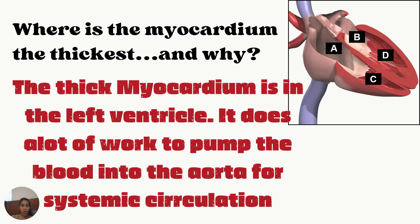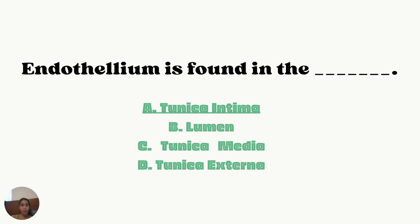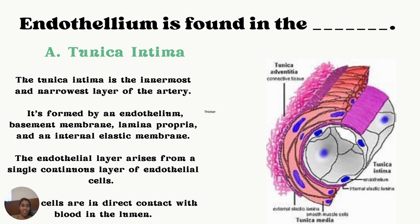The myocardium is thickest in the left ventricle. Now, endothelium — it is found in the tunica intima, which is the innermost, narrowest layer of the artery. The tunica intima is formed by an endothelium. You can do more research if needed, but remember: endothelium is found in the tunica intima.